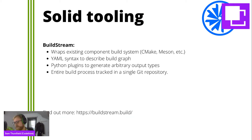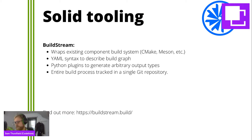BuildStream operates at a higher level where it reuses the build system that a component already has. So if we're building GCC, for example, we would call into the Autotools build system, or we'd call into CMake or Meson. There are disadvantages and advantages to that, but the big advantage is you don't have to rewrite any build systems. So when you're distributing a lot of open source projects, it's the only option.